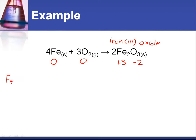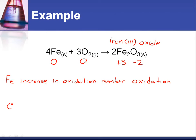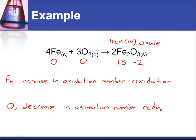With the Fe, we've had an increase in oxidation number, and if you have an increase in oxidation number, it is oxidation. For the O2, we've had a decrease in oxidation number, which is reduction. So we know that the iron has been oxidized and the O2 has been reduced.